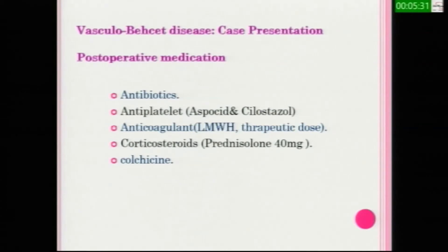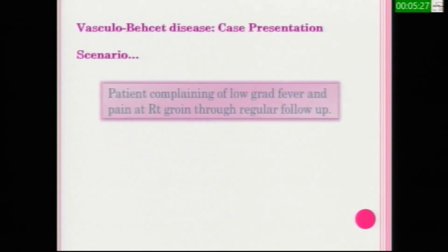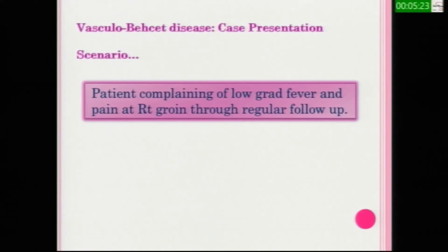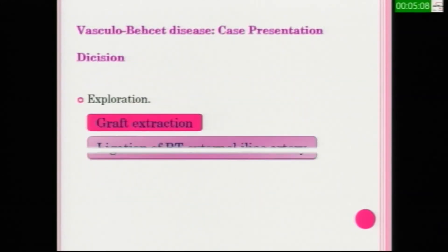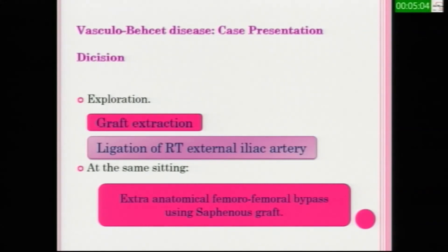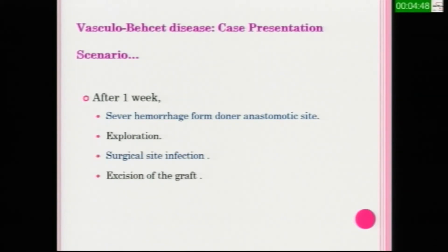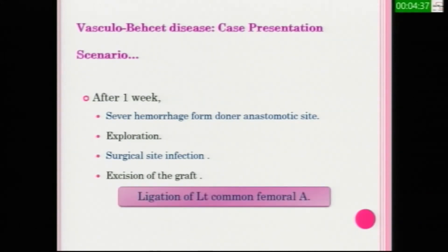Postoperatively, the patient received antibiotic, antiplatelet, corticosteroid, and colchicine as immunosuppressive therapy. Unfortunately, one month after discharge, the patient complained of low-grade fever and pain at the right groin. Duplex ultrasound showed a patent graft with perigraft collection 5 x 10 cm not responding to medical treatment. Exploration found evidence of infection; graft extraction and ligation of the right common femoral and iliac artery were performed. To revascularize the limb and avoid infection, an extra-anatomical femoral-femoral bypass using a saphenous graft was performed. One week later, unfortunately, there was severe hemorrhage from the donor anastomotic site, with evidence of severe site infection. The graft was excised and the left common femoral artery was ligated.